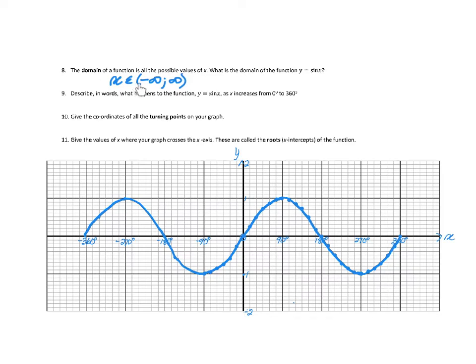Note that infinity has a round bracket because a number obviously can't equal infinity. I want you to be clear on why the domain and range are different. With the range, y will never go higher than 1 — it's a property of the function; the wave will never go above 1 or below −1, even drawn to infinity. That's why the range is restricted, but I can draw the waves to infinity, giving an unrestricted domain.